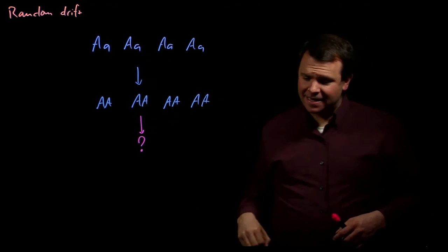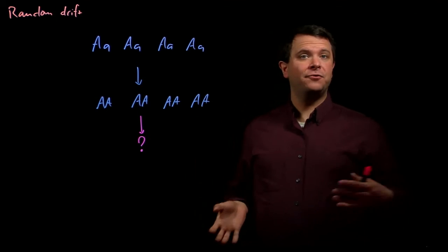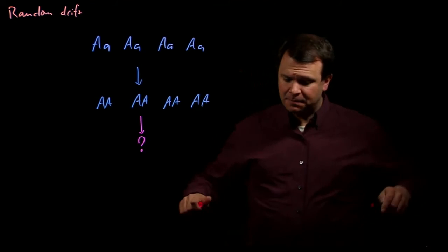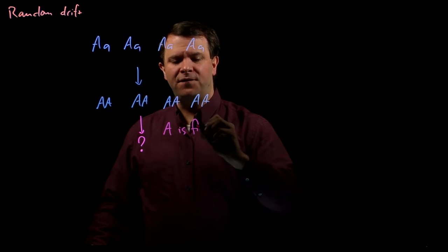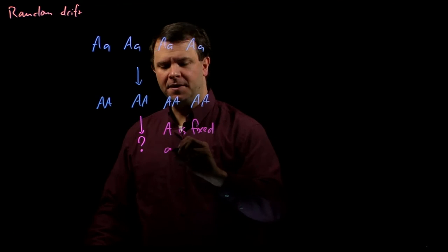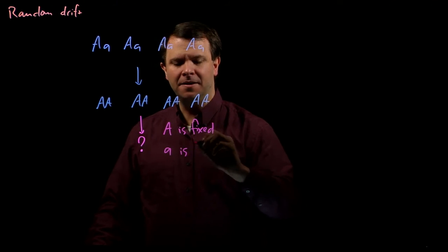This random event has reduced the amount of genetic variation in this population. We say that now the big A allele is fixed, while the little a allele has been lost.